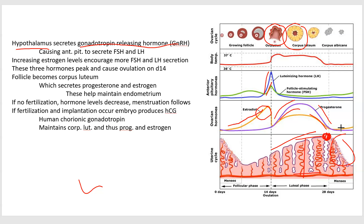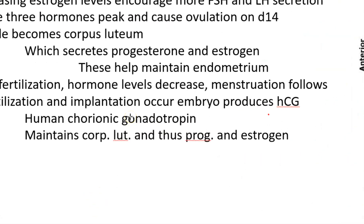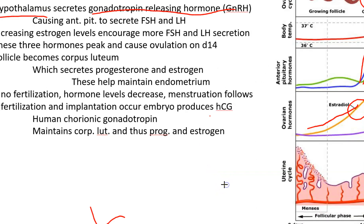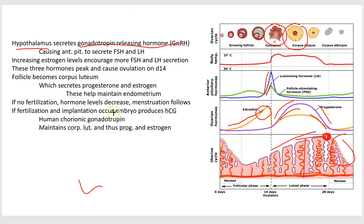Interestingly, if there is a fertilization event, the embryo is going to produce something called human chorionic gonadotropin, which, in addition to mimicking the effects of estrogen and progesterone, tends to maintain the estrogen and progesterone levels and thus maintain this endometrial layer throughout pregnancy.